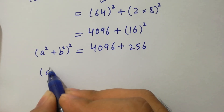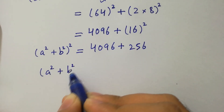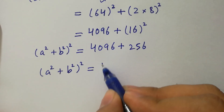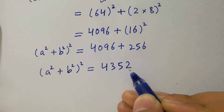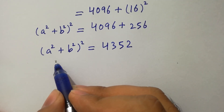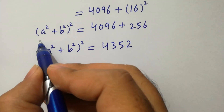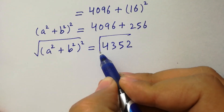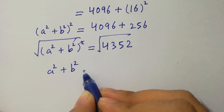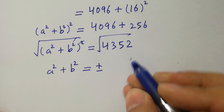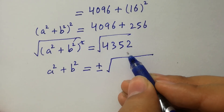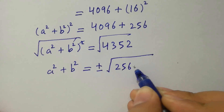We have a squared plus b squared, whole squared, equal to 4096 plus 16 times 16 is 256. Adding them, we have a squared plus b squared whole squared equal to 4096 plus 256 equals 4352, which is the same as 256 times 17.